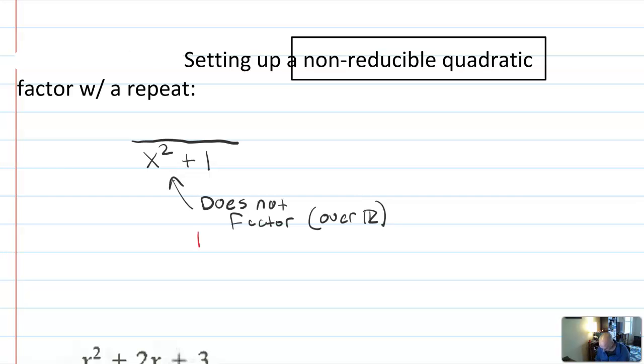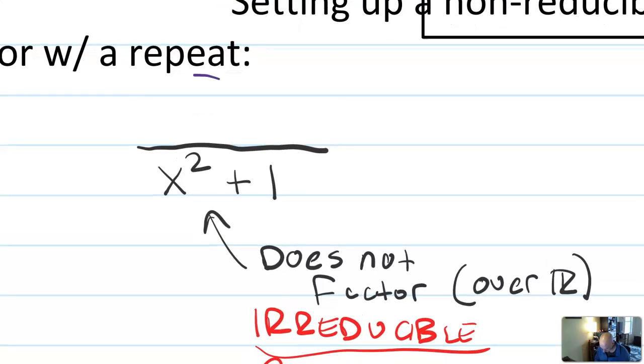So this is an example of an irreducible quadratic factor on the bottom. Now, if you think about taking this and making it into a fraction, there's a lot of different things that could be on this denominator. There could, of course, be a number like a three.